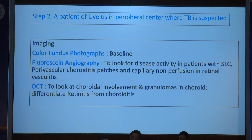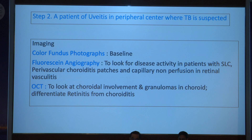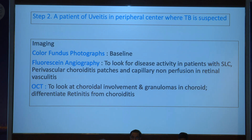The next step: apart from thorough clinical examination, always rely on fundus photography to document fundus findings, looking at the level of the lesion, activity, location, pattern and distribution. Fluorescein angiography is very important in uveitis to look at disease activity, leakage, and non-perfusion — for example in retinal vasculitis. Non-perfusion is an important feature of ocular TB. Occlusive retinal vasculitis is seen in very selected conditions, TB being one. OCT is used to look at choroidal involvement and granulomas, outer retinal involvement, and to differentiate retinitis from choroiditis.